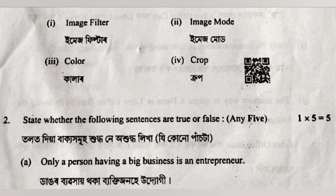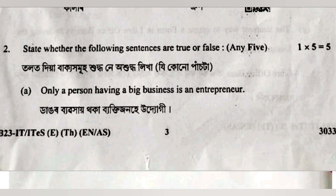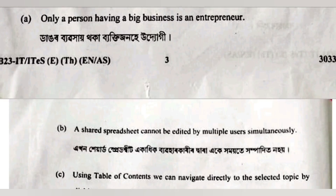Question number two, state true or false. First: only a person having big businesses is an entrepreneur — this is false. You can be an entrepreneur regardless of business size. Number two: false. Number three: a spreadsheet cannot be edited by multiple users simultaneously — this is false, because you can collaborate in Google Sheets.